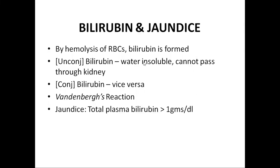How can the bilirubin level be increased in the blood? We know that bilirubin is formed by the hemolysis of RBCs. After 120 days, the RBC membrane becomes fragile, they will undergo hemolysis and more bilirubin will be formed. This is the unconjugated bilirubin, which is water insoluble and cannot pass through the kidney. This unconjugated bilirubin will be transported via the blood to the liver where conjugation will take place, and then it is excreted via feces and urine.